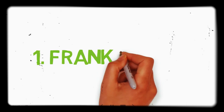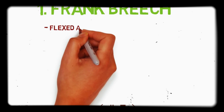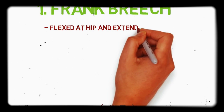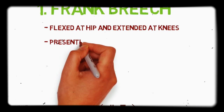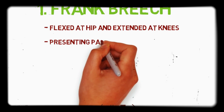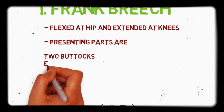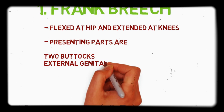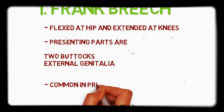First is the Frank breech. So what is Frank breech presentation? Here, flexion is occurring at the hip and extension is occurring at the knees — so the knees are extended and hips are flexed. The presenting parts are two buttocks and external genitalia. It is very common in primigravida.